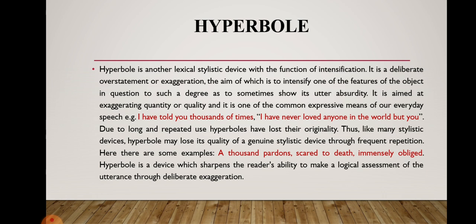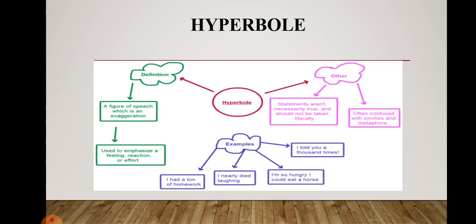Some examples of clichéd hyperbole include: 'a thousand pardons,' 'scared to death,' 'immensely obliged.' Hyperbole is a device which sharpens the reader's ability to make a logical assessment of the utterance through deliberate exaggeration. The definition of hyperbole is a figure of speech which is an exaggeration, used to emphasize a feeling, reaction, or effort.